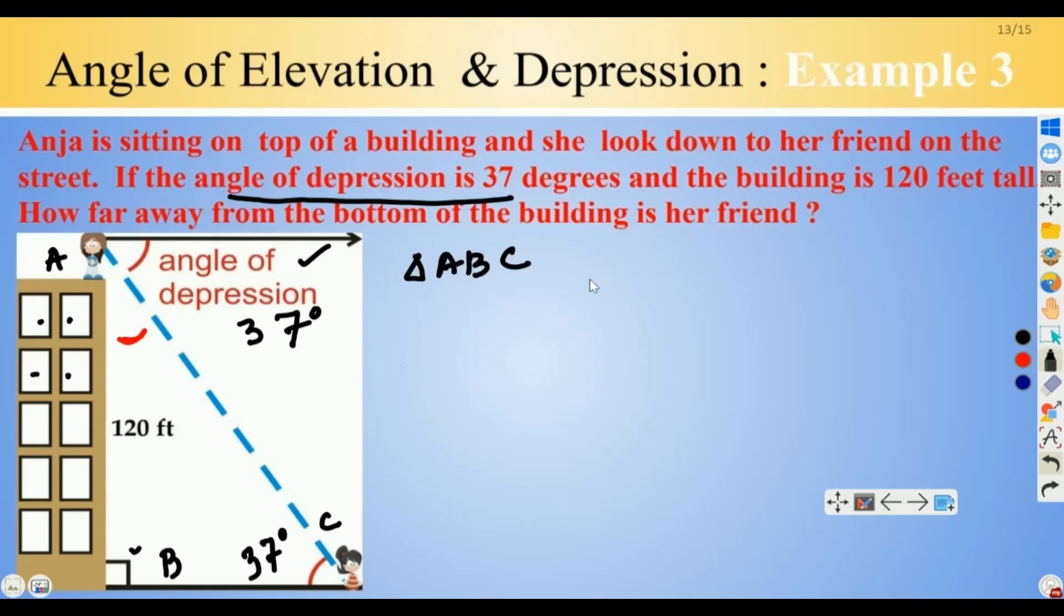We assume the ground is also horizontal. So I could extract all the information from here. We have angle ACB equals 37 degrees, and with respect to this angle, the building AB is the opposite side and BC is the adjacent.